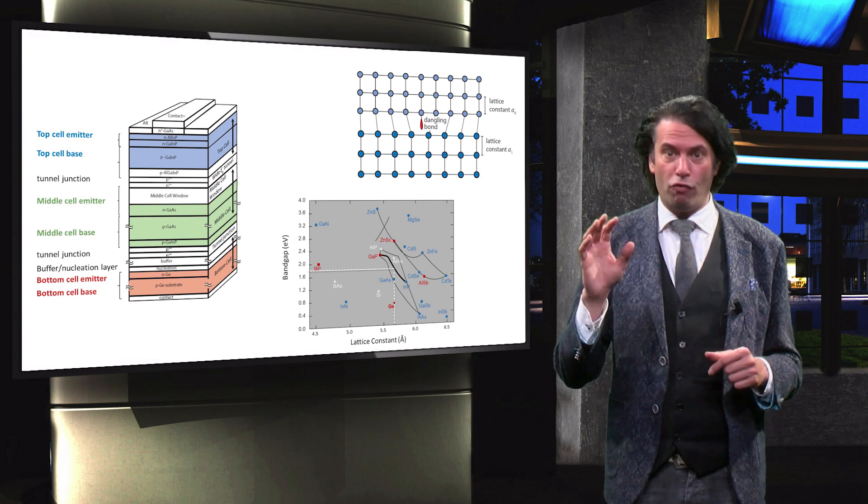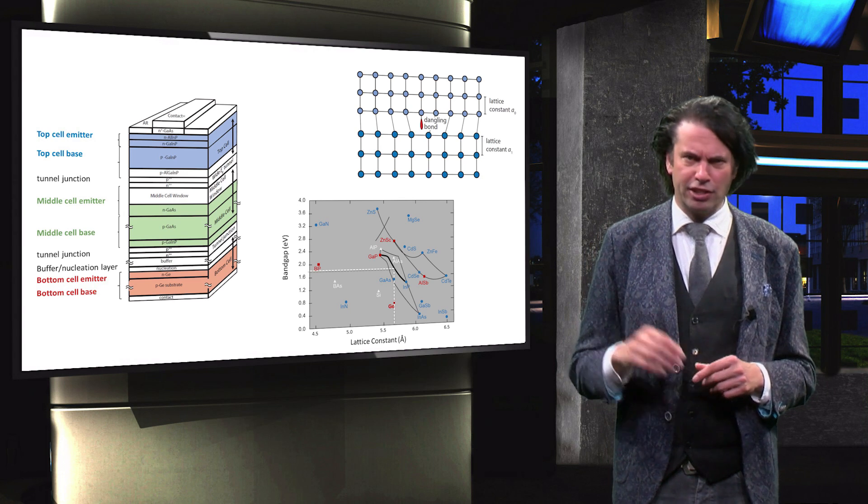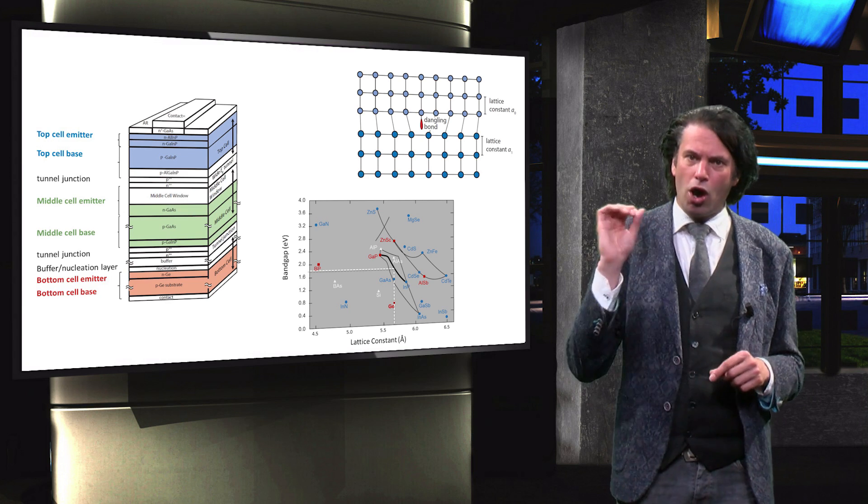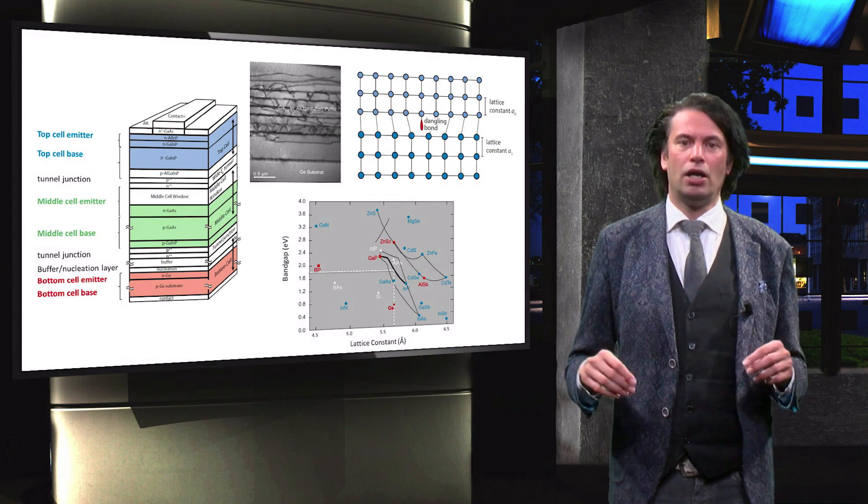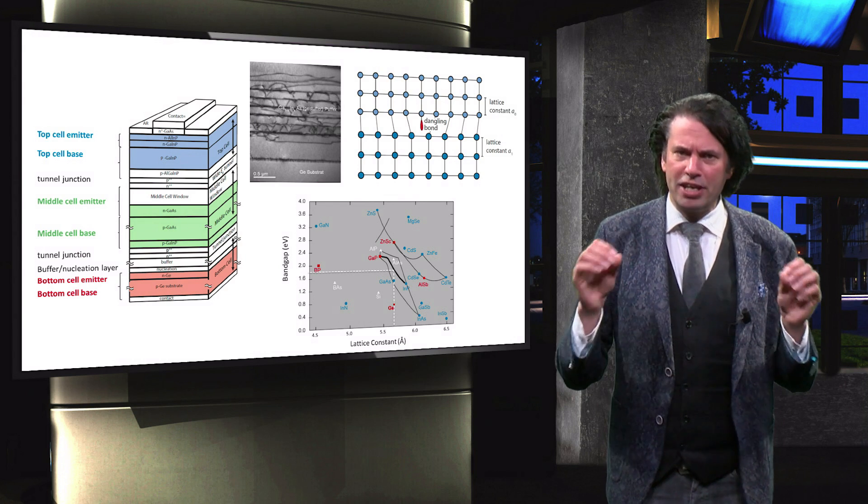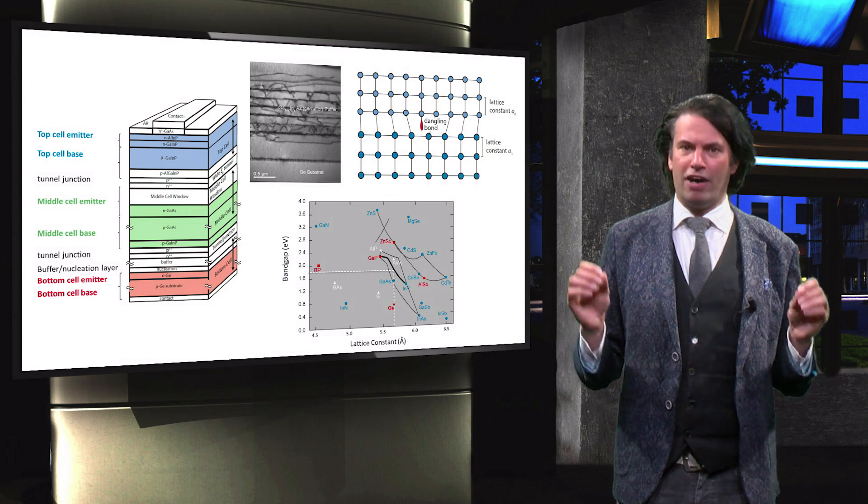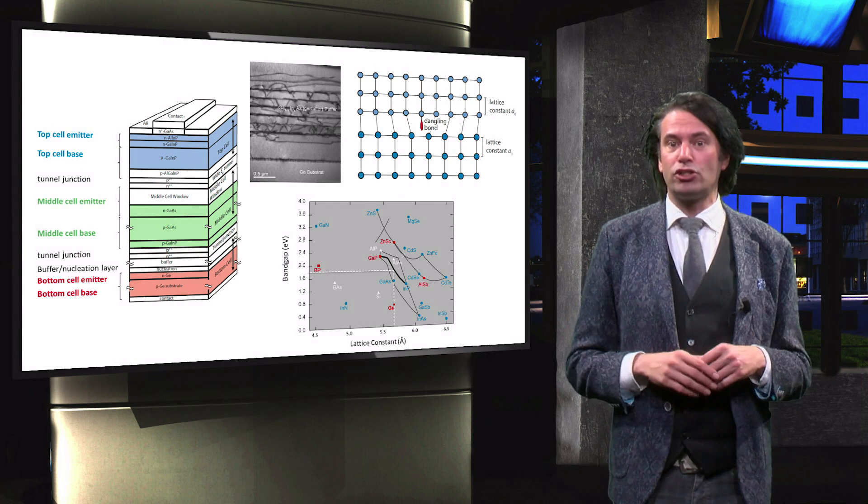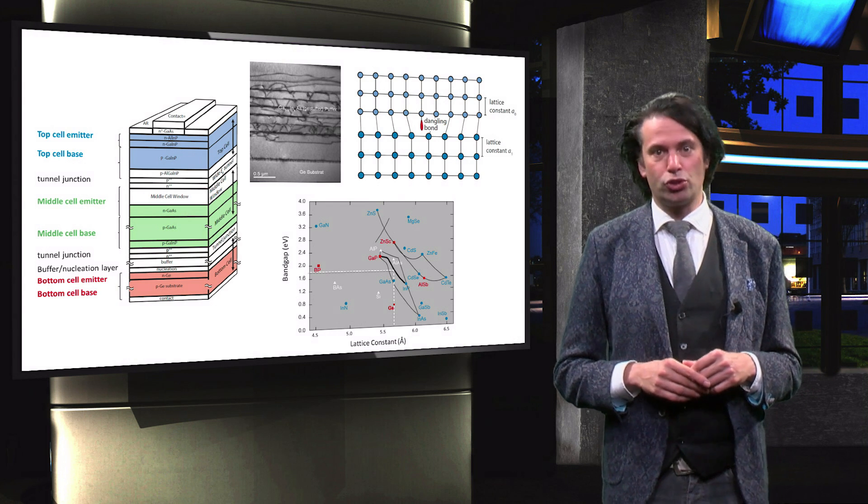The different cells in the 3-5 multijunction device should have similar lattice constants to minimize recombination losses. But we saw that for quadruple or 5-junction devices it is virtually impossible to make a lattice-matched device with optimal bandgap energies. We therefore discussed the metamorphic solar cells and the graded buffer layers used by these devices. In the next video we will look into special applications of the 3-5 multijunction solar cells.